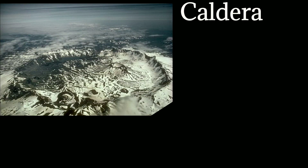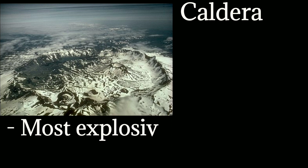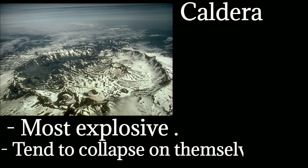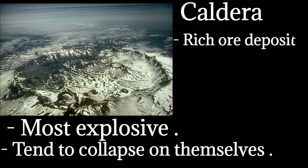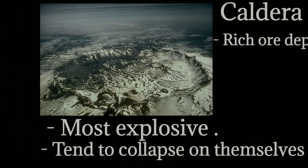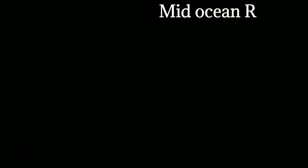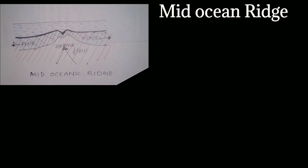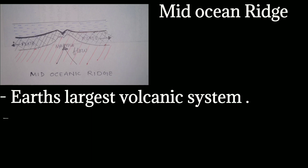Calderas are rich in ore deposits. Then we have mid-ocean ridge volcanoes. These form along divergent plate boundaries where the ocean floor is created as the earth's tectonic plates spread apart.